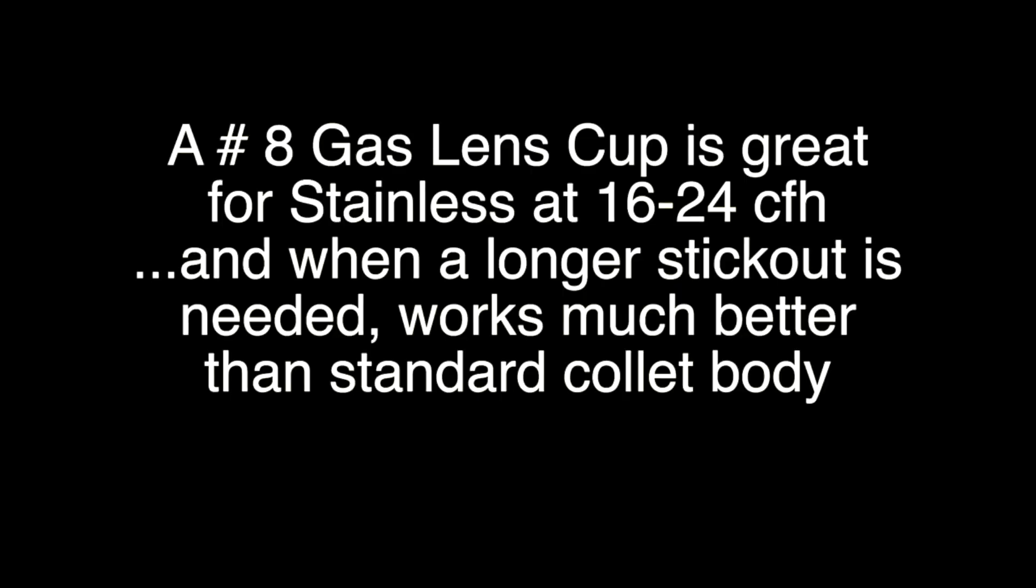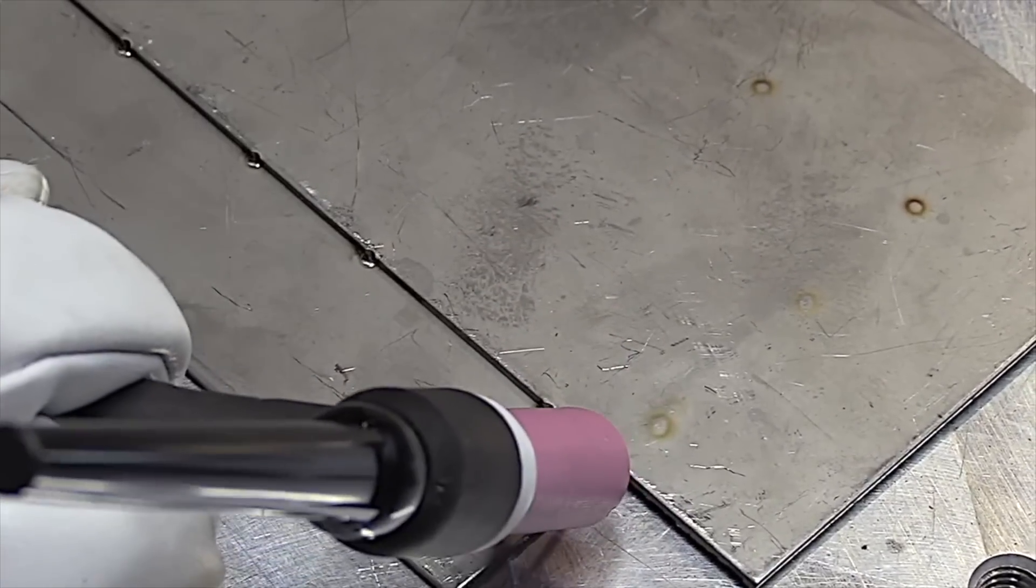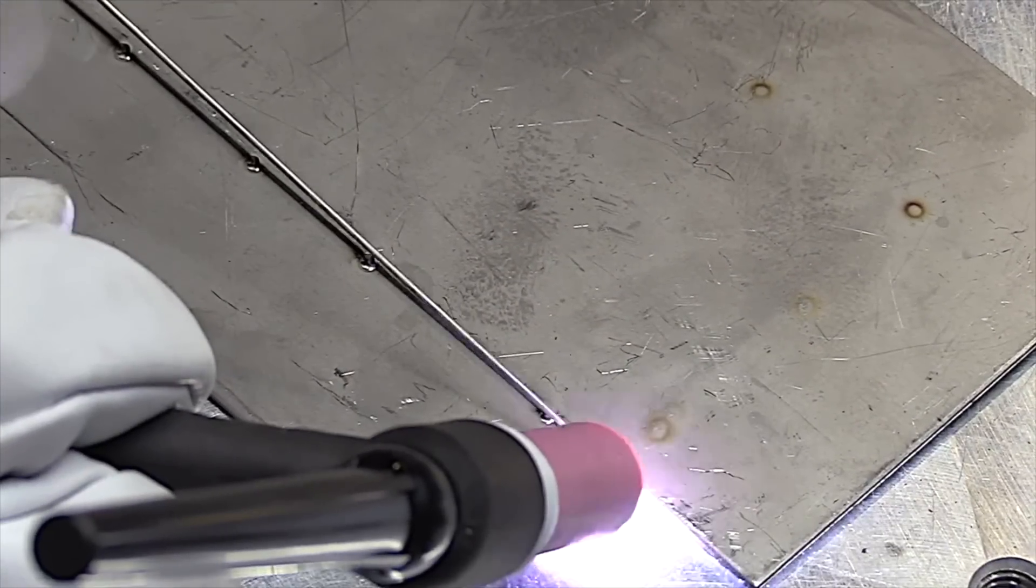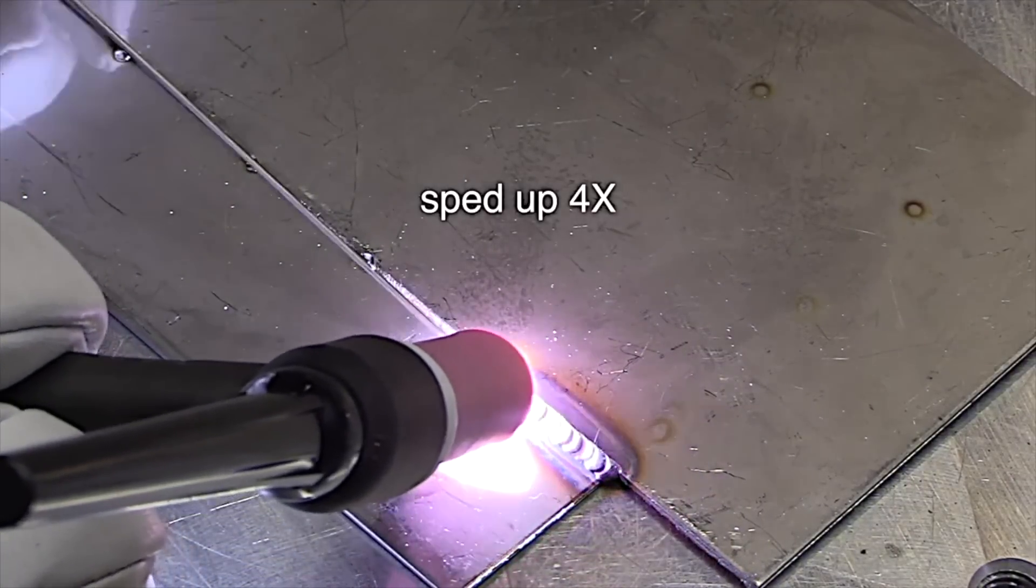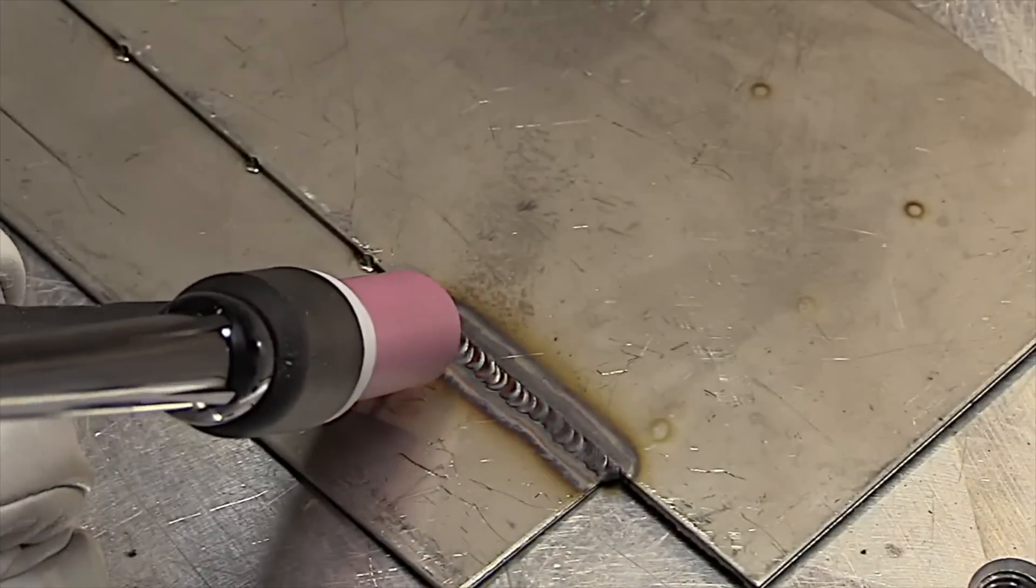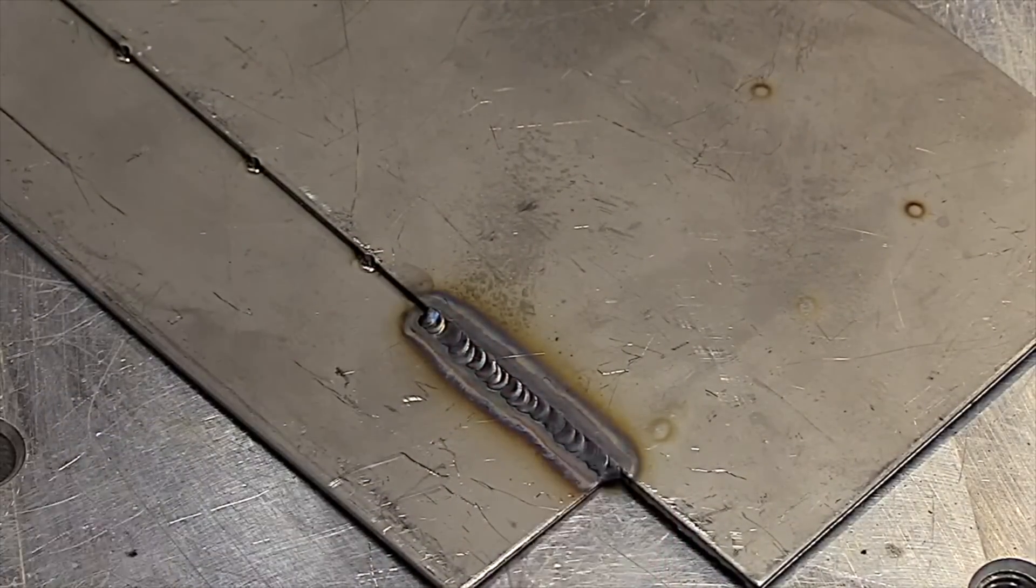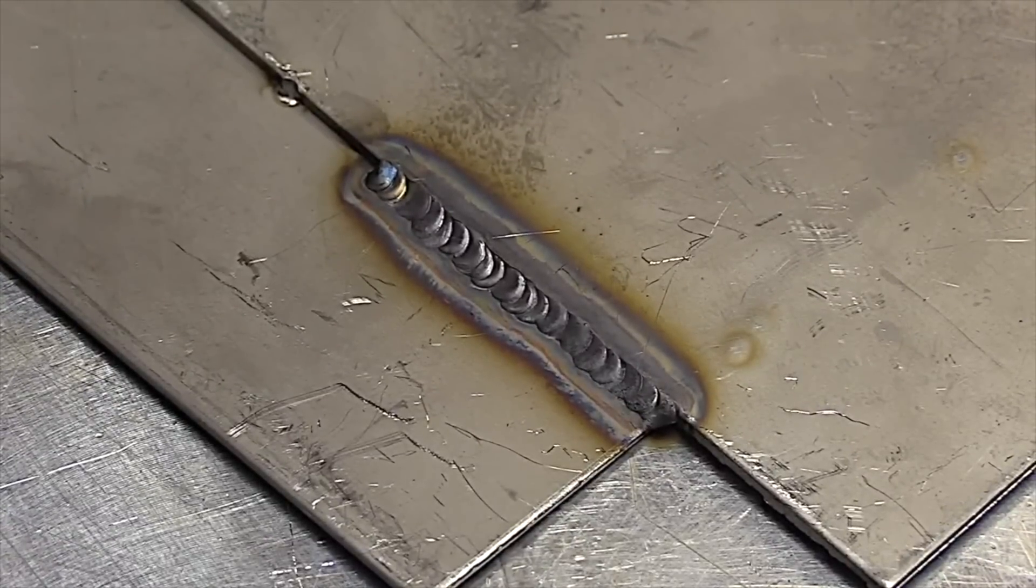This little demonstration really shows the difference between the standard hardware that comes with a TIG torch as opposed to a stubby gas lens. I'm using the same long stick out here. It's a half inch stick out. I'm going to use the same stick out on all these cups. This is sped up 4x but you can see it's just kind of squiggly. I'm losing shielding at that stick out at about 20 CFH. Not very good for stainless steel.